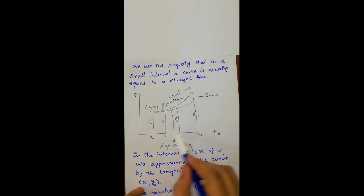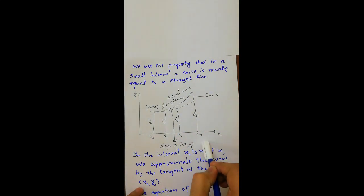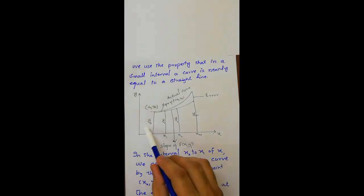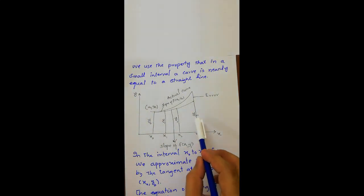If we divide this big interval into smaller intervals from x0 to xm, we have to find y0, y1, y2, up to ym.